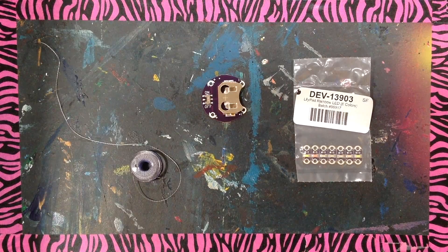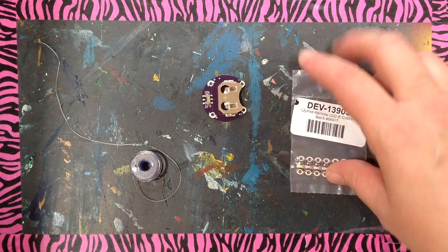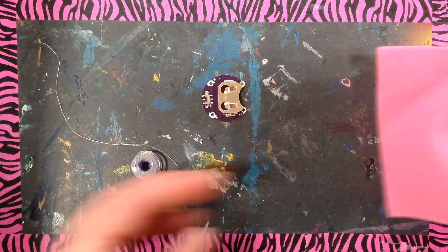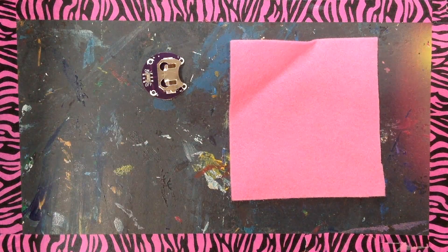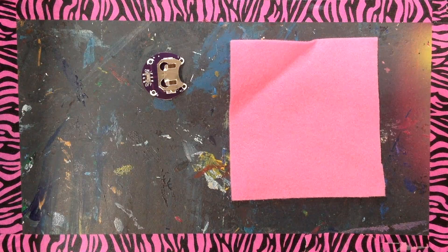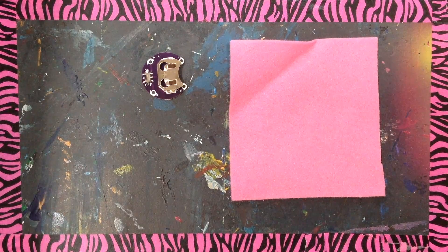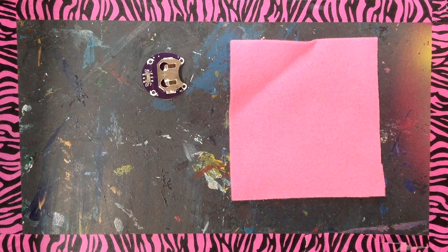The first thing you need to do is to anchor your battery holder. You're going to get a four by four piece, that's inches, piece of felt to do your first circuit.